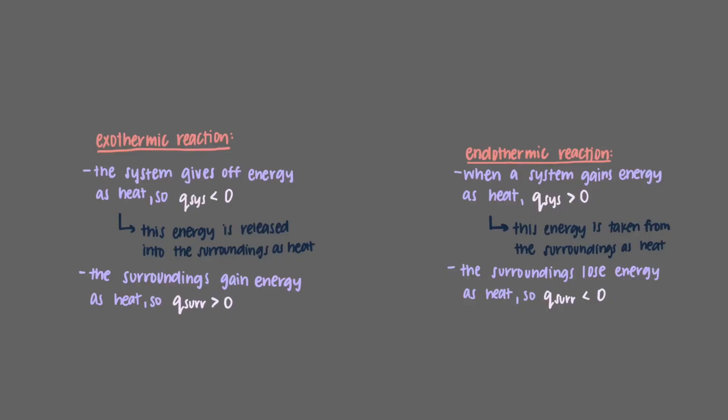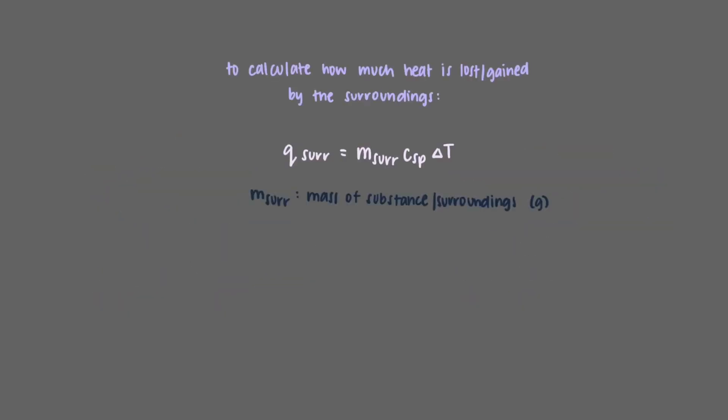We can actually calculate exactly how much energy as heat is lost or gained by the surroundings by using this equation. M of the surroundings is the mass of the substance or surroundings in grams. Cp is the specific heat capacity.